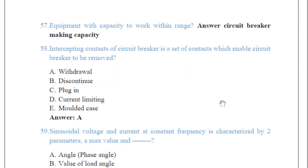Question 57 is asking about the equipment with capacity to work within a range — that is, circuit breaker making capacity. A circuit breaker is an electrical switch designed to protect an electrical circuit from damage due to overload or over-current, caused by over-current or short circuit. Its basic function is to interrupt current flow. The making capacity of a circuit breaker is the maximum current which the breaker can conduct at the instant of closing.